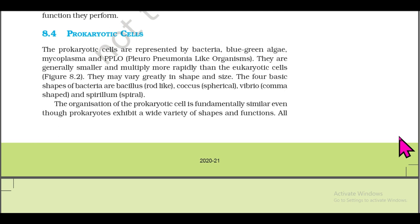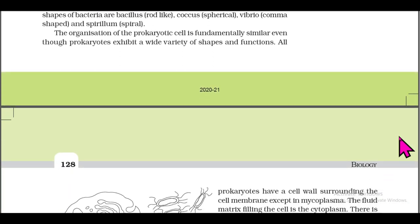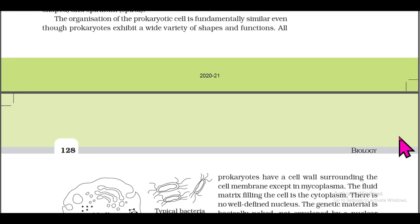Section 8.4: Prokaryotic Cells. Prokaryotic cells are represented by bacteria, blue-green algae, mycoplasma, and PPLO (pleuropneumonia-like organisms). They are generally smaller and multiply more rapidly than eukaryotic cells. The four basic shapes of bacteria are: bacillus (rod-like), coccus, spiracle, vibrio (comma-shaped), and spirillum (spiral). The organization of the prokaryotic cell is fundamentally similar even though prokaryotes exhibit a wide variety of shapes and functions.